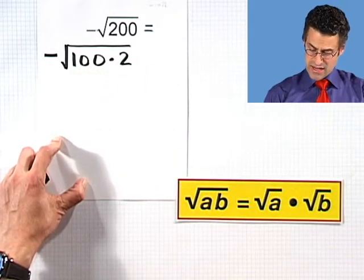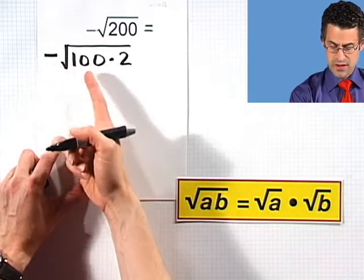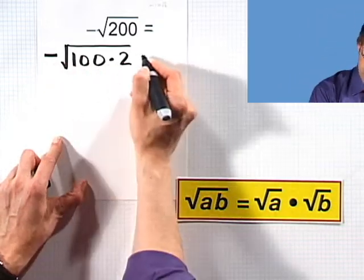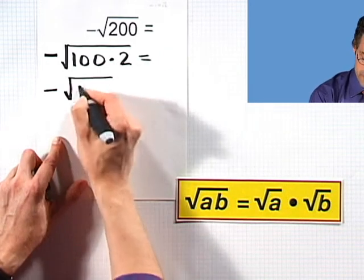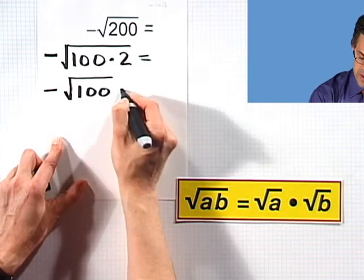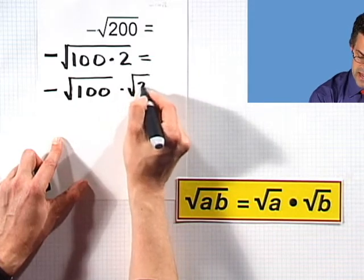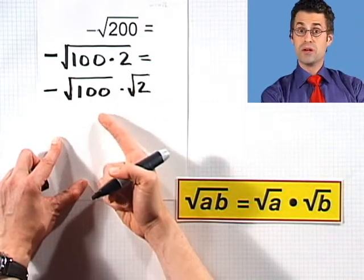But now I can use this property, and notice that I have the square root of something times something. So that's going to equal, negative sign, square root of the first number times the square root of the second number.